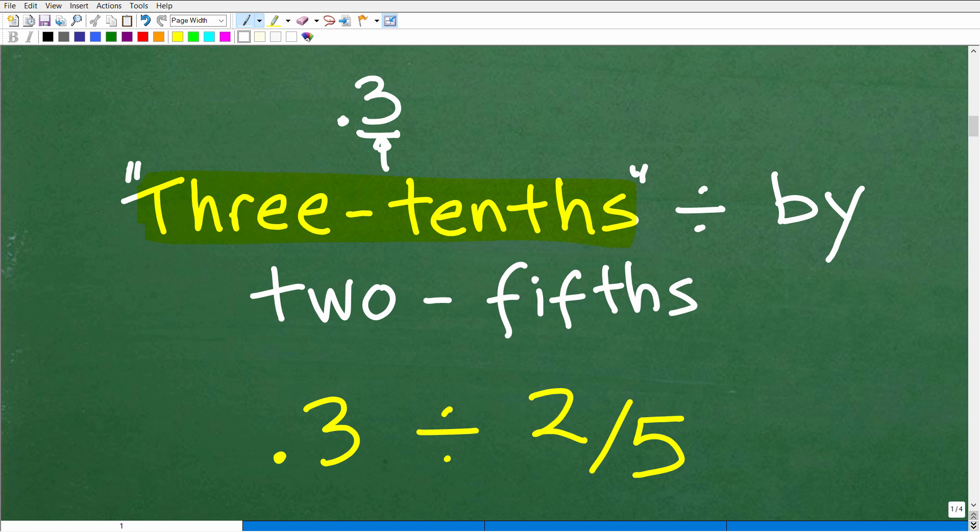This is the stuff that we learned way back in elementary school and middle school that probably most of us tend to forget because we work with calculators all the time. But 0.3 is what we would say three-tenths. Now, you can write that as a fraction.